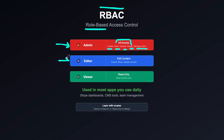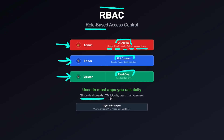Next you have editor, which is usually a step below admin. Editors can create, read, or update content, but they cannot delete resources and cannot manage other users. Viewer users can only read data — they can read resources and content, but cannot update or create anything in the system. This is used in apps you use daily like GitHub, Stripe dashboards, CMS tools, and team management tools.